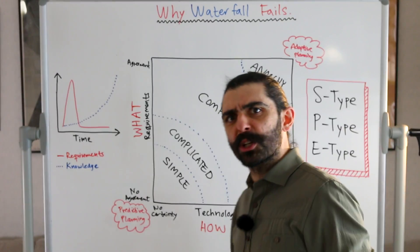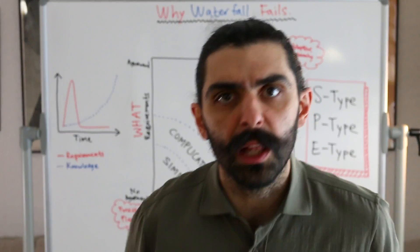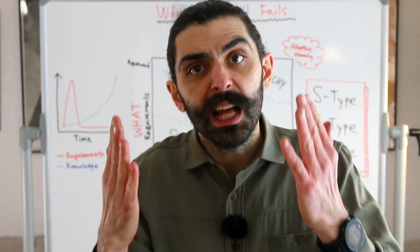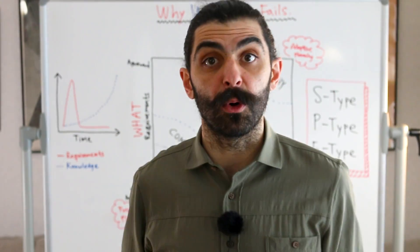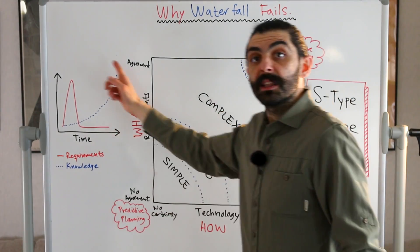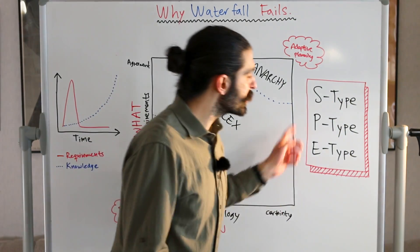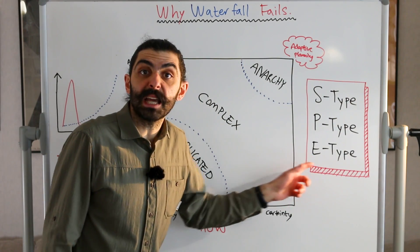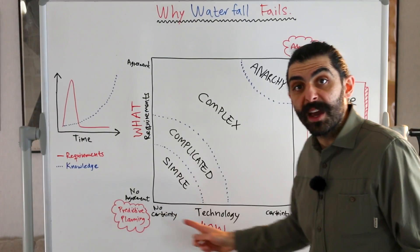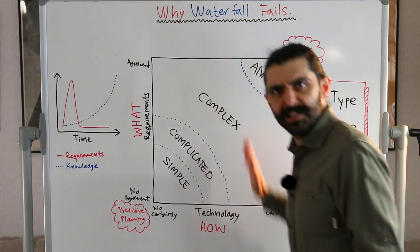Most of us know that the software project management method waterfall doesn't work for a lot of projects. Today, I want to share three models that help explain why waterfall doesn't work. The three explanations are: one, that we specify most of the requirements when we know the least; two, that most of the systems we build are E-type systems; and three, that most problems we face are either complicated or complex in the Stacy matrix.